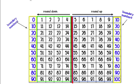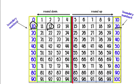Look at number 12. The boundary numbers for 12 are 10 and 20, meaning that 12 is between 10 and 20. When we round, we are looking for which boundary number it is the closest to. So looking at 12, is it closer to 10 or is it closer to 20? 12 is closer to 10, so 12 rounded to the nearest 10 is 10.